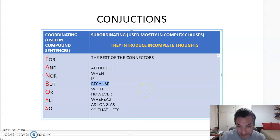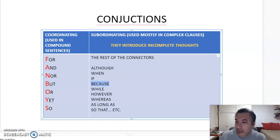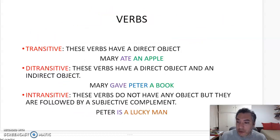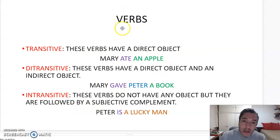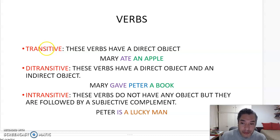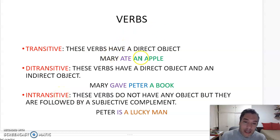Remember that we also have categorical analysis. This categorical analysis includes verbs. There are three different types of verbs: verbs can be transitive, ditransitive, or intransitive. Let's see examples.